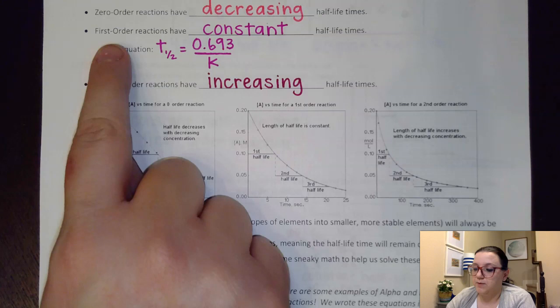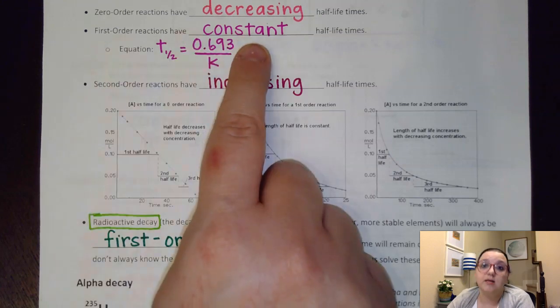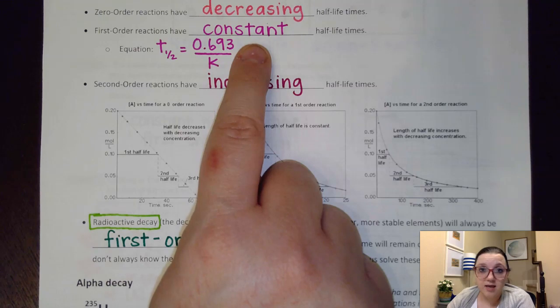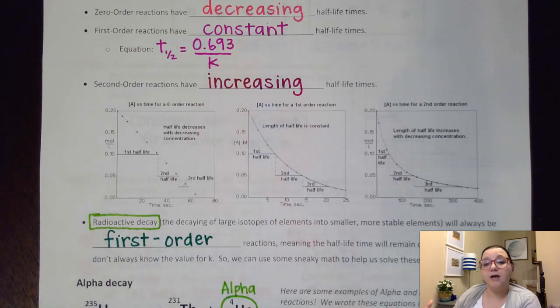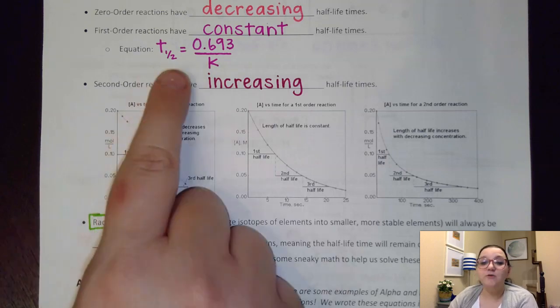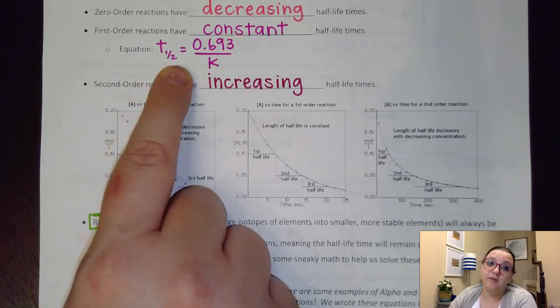Our first-order reactions have a constant half-life time, which is really convenient. It stays the same throughout the course of the reaction. It's convenient because that enables us to have an equation that we could always use to calculate the half-life time wherever in the reaction we're at.